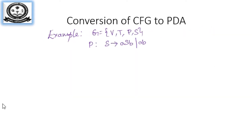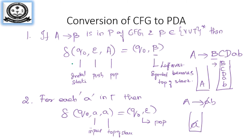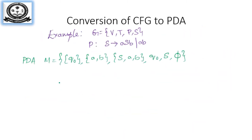Let us see an example of how a PDA is constructed for a given CFG. The PDA M accepts with empty store, so we need only one state q0. The terminal symbols in the grammar are a and b. The stack consists of non-terminal S and terminals a and b. The initial state is q0, the top of the stack is the starting symbol S, and we accept with the empty store.